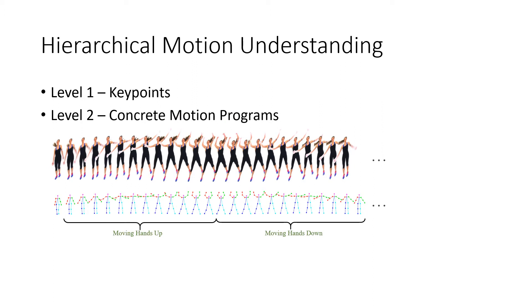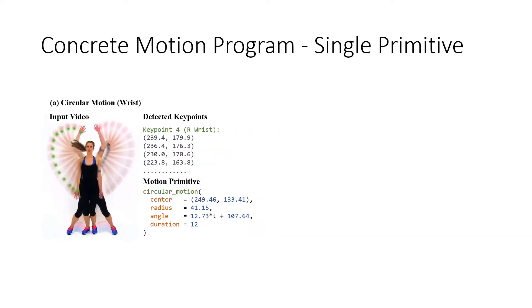Our second level consists of what we define as concrete motion programs. This level represents primitive level information by grouping together a sequence of frames and poses, such as moving hands up for the jumping jacks video. Concrete motion programs are sequences of primitives where each primitive could either be a circular, linear, or stationary motion. Every body keypoint has one such concrete program that describes its motion.